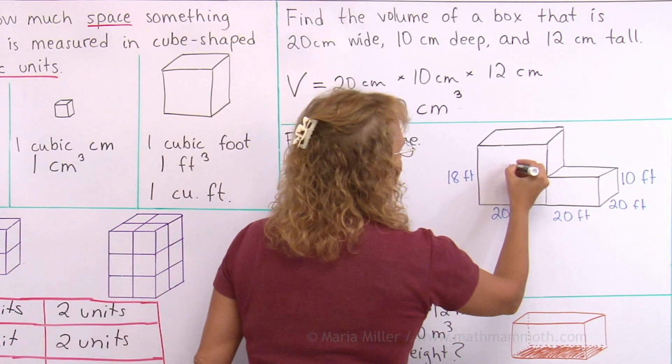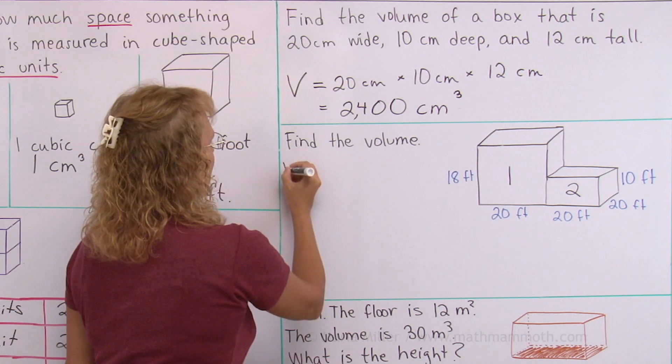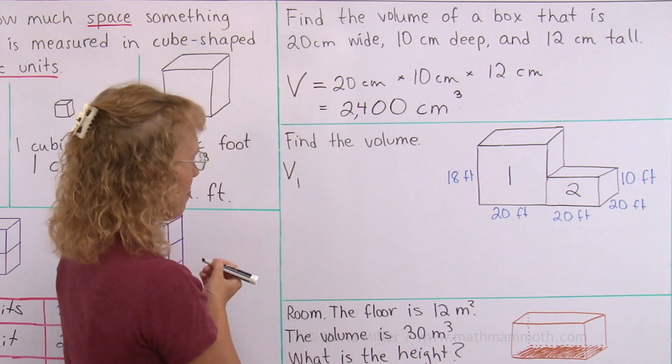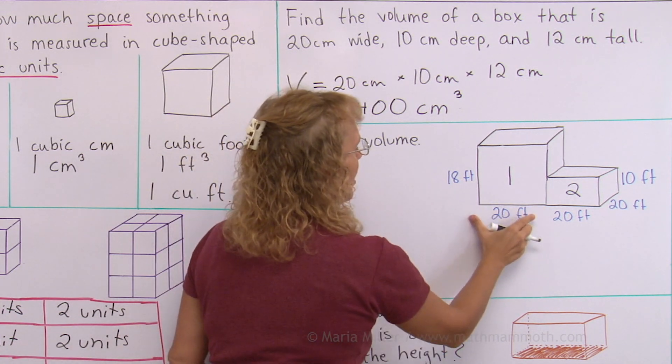So let me number, this is one, this is part two, part one, part two. And then here I can write volume of the part one. And for that, I will multiply, once again, the three dimensions,